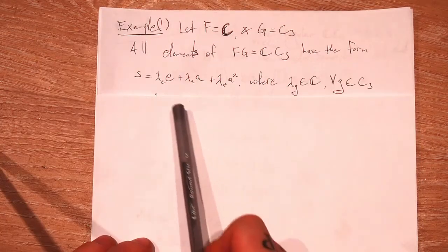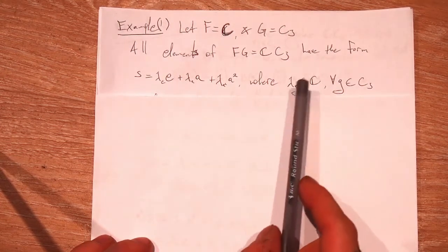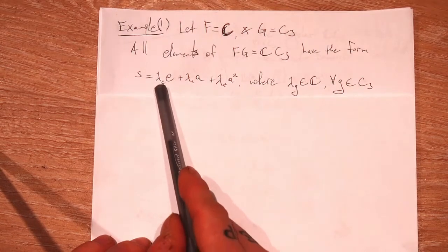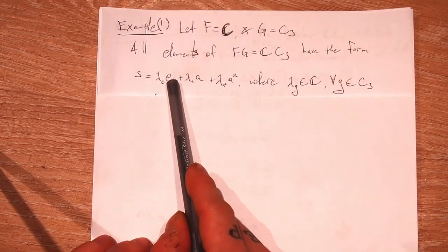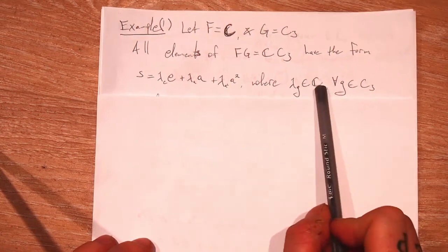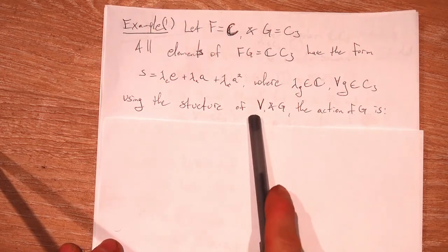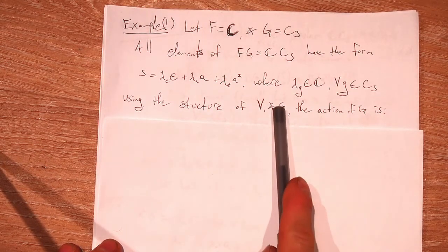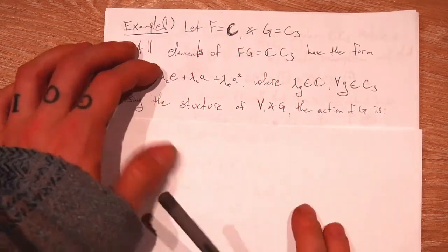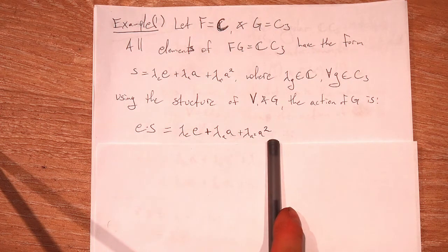Recall that for a group algebra, our basis vectors are the group elements, and they're just scaled by elements of our field. I indexed the components by the group element that they're scaling. So lambda E, lambda A, lambda A squared — these are just complex numbers, and there's one for each element in our group. So here's what I mean by using the structure of our vector space and our group, which is all just our group product. We can define our action like this. The identity — what does it do? We know that it just leaves everything alone.